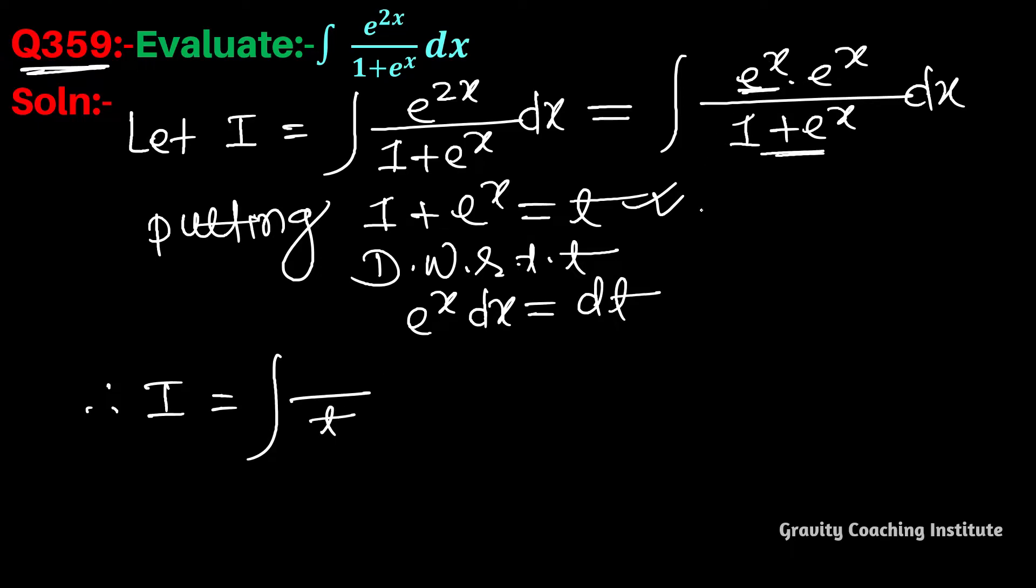This e to the power x value we have, e to the power x equal to t minus 1, or this e to the power x dx in place of dt. Or fraction split to get t by t minus 1 by t.